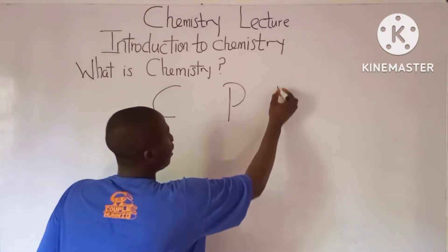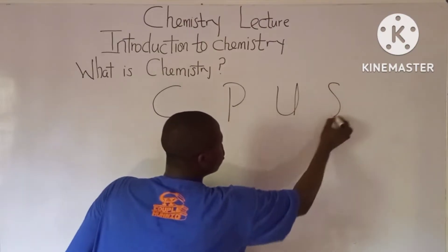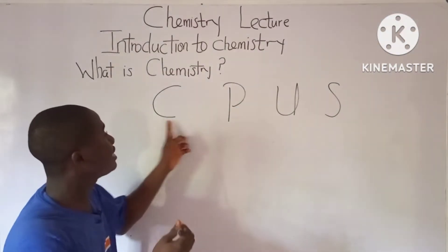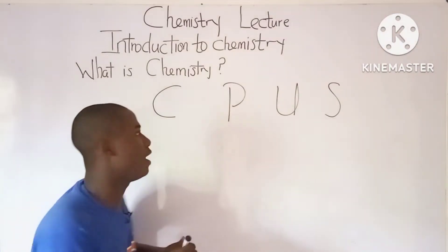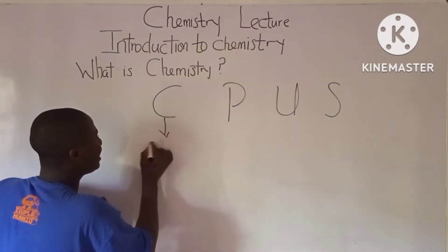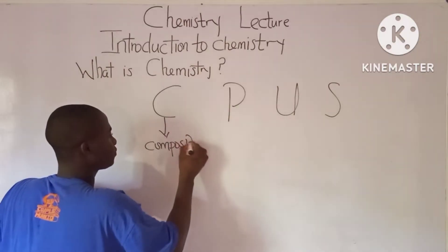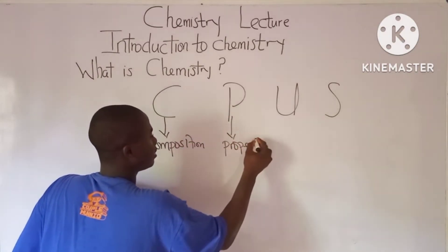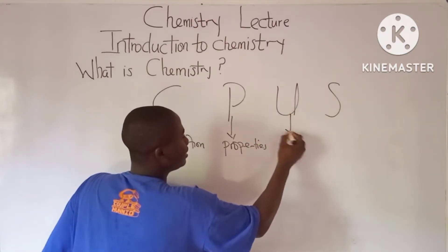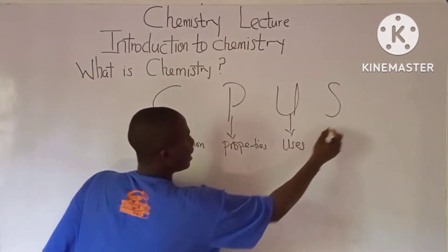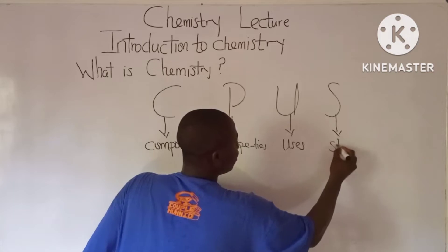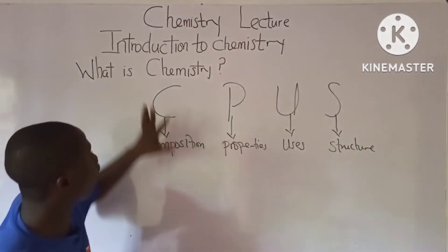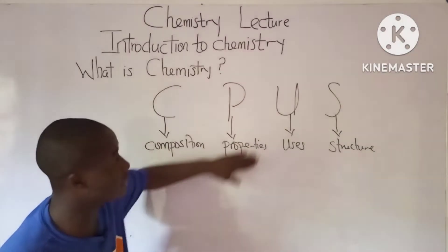Chemistry is simply the study of the CPUS of matter. C means composition, P means properties, U means uses, and S means structure of matter.